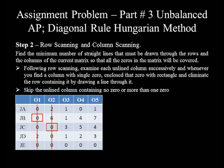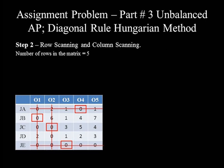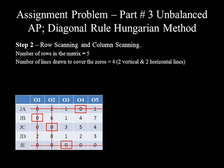Following row scanning, examine each unlined column successively, and whenever a column with a single zero is found, enclose that zero with a rectangle and eliminate the row containing it by drawing a horizontal line. Skip lined columns and unlined columns with no zero or more than one zero. Columns 1 and 2 are already deleted. The only unlined zero of column 3 is enclosed in a rectangle and row 5 is deleted. Column 4 also contains only one unlined zero, so we enclose it and delete row 1. Number of rows is 5; number of straight lines drawn is 4 (two vertical, two horizontal). Since 4 < 5, we proceed to step 3.